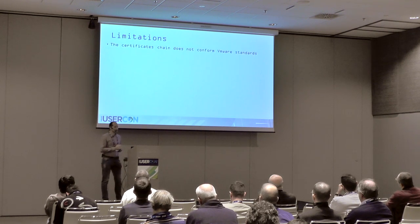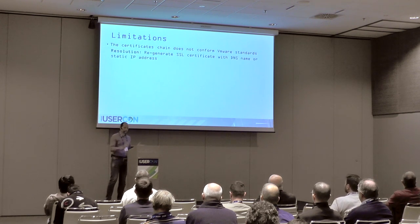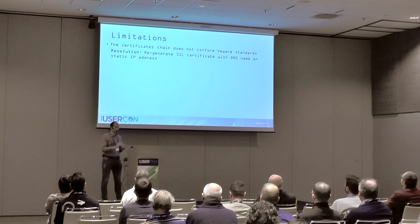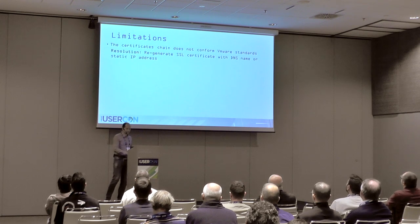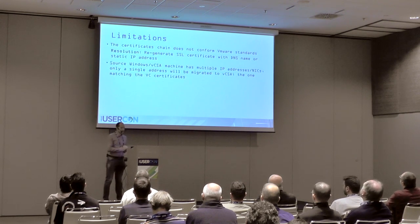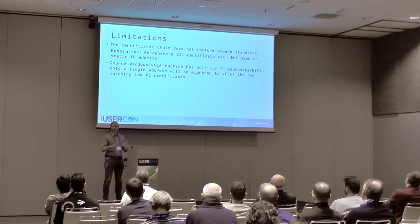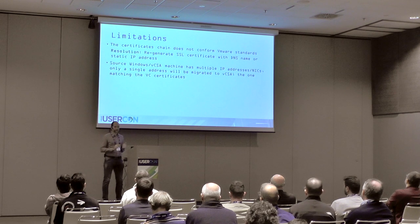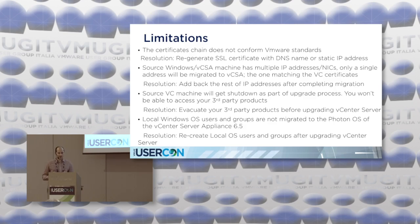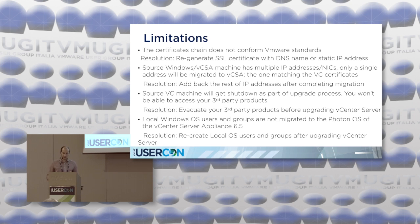One limitation is that the certificate chain doesn't conform to VMware standards — use the VMware tools to regenerate the certificates. Another limitation is that the source vCenter Server might have more than one IP address. As part of the migration, we preserve just the one IP address that matches the vCenter Server and PSC certificates, to ensure a successful upgrade.